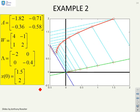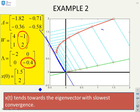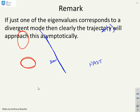A different example with a different A, W, and Λ shows the same principle. The slowest convergence is associated with eigenvalue -0.4, and the corresponding eigenvector defines a particular direction in the phase plane. As time progresses, x(t) tends toward that eigenvector direction because convergence along the other eigenvector is much faster.